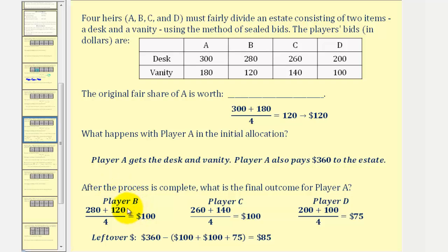Player B's fair share would be the sum of their bids divided by four, or $100. The same thing for players C and D. Player C's fair share is $100, player D's fair share is $75. Because they did not receive any items, they received this amount in cash from the estate.